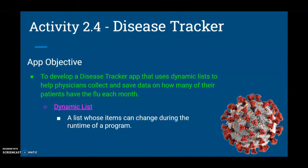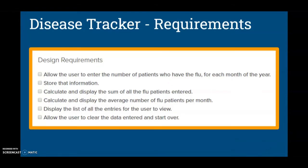Let's take a look at the design requirements for our disease tracker app. We need to allow the user to enter the number of patients who have the flu for each month of the year. That information will then be stored into a database. We'll calculate and display the sum of all flu patients entered, as well as find and display the average per month. We'll display the full list of entries and allow the user to clear the data and start over.